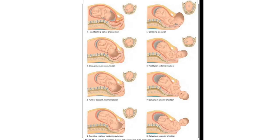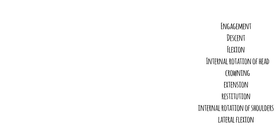Before going to discuss the mechanism of labor, we need to discuss some other words. The mechanism of labor is mainly described in nine steps: first, engagement; second, descent; flexion; internal rotation; crowning; extension; restitution; internal rotation of shoulders; and lateral flexion. Those are the nine steps.